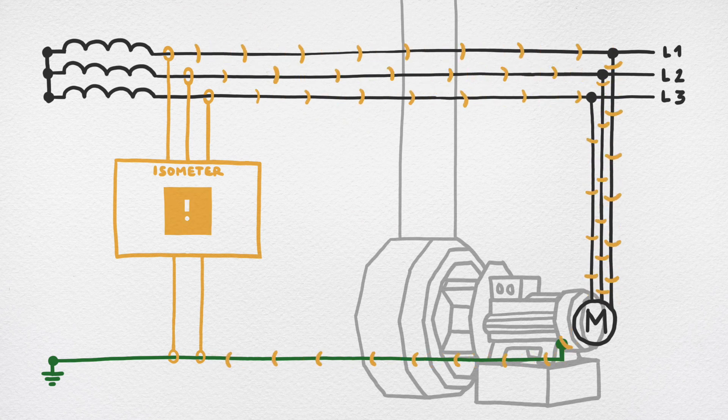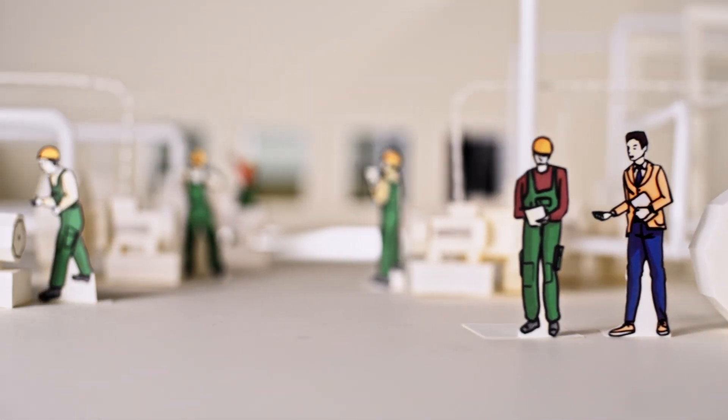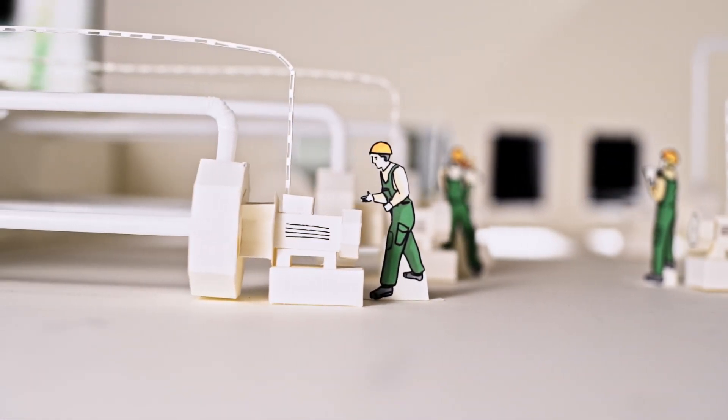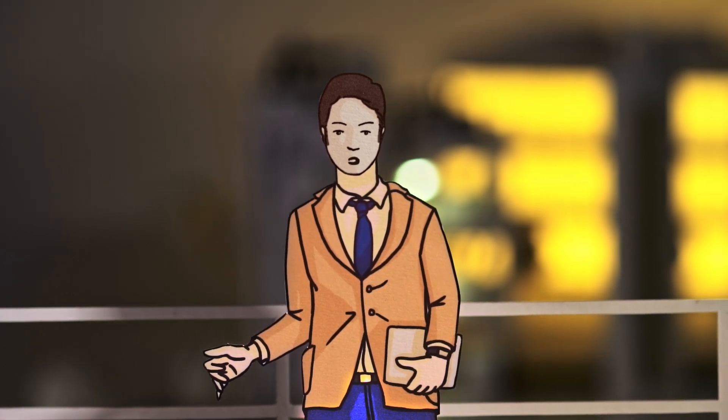If a fault is detected, the Bender Technology provides a notification and the service team can plan a controlled intervention in good time. The capability to locate faults while operations continue means that the plant does not have to be shut down.